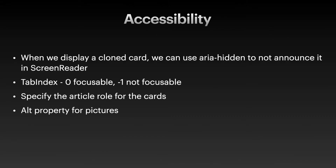In the end, I want to mention some accessibility considerations. When implementing the circular carousel, we can use the aria-hidden property for the cloned cards so that they are not announced by the screen reader. We can use negative tab index on the cloned cards as well so that those cards are not tabbable. We can specify the article role on the cards and always specify alt properties for the pictures.